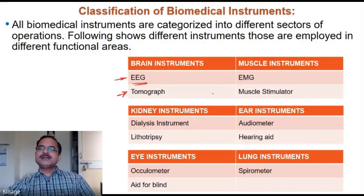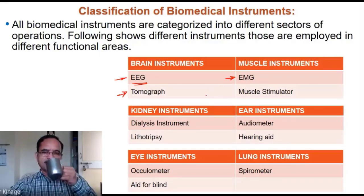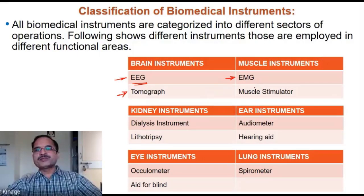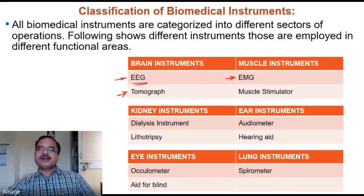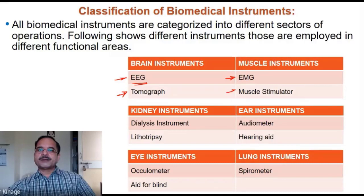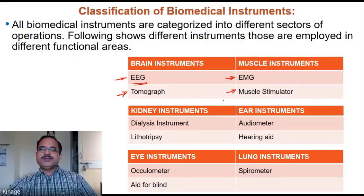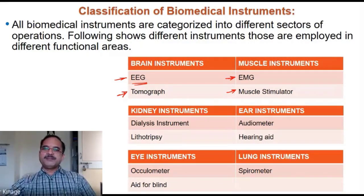The electrical signal related to muscles is the EMG — electromyograph. Similar to EEG, it records the electrical activities of the muscles. There is also the muscle stimulator, an electrical device that provides impulses to stimulate muscles externally.